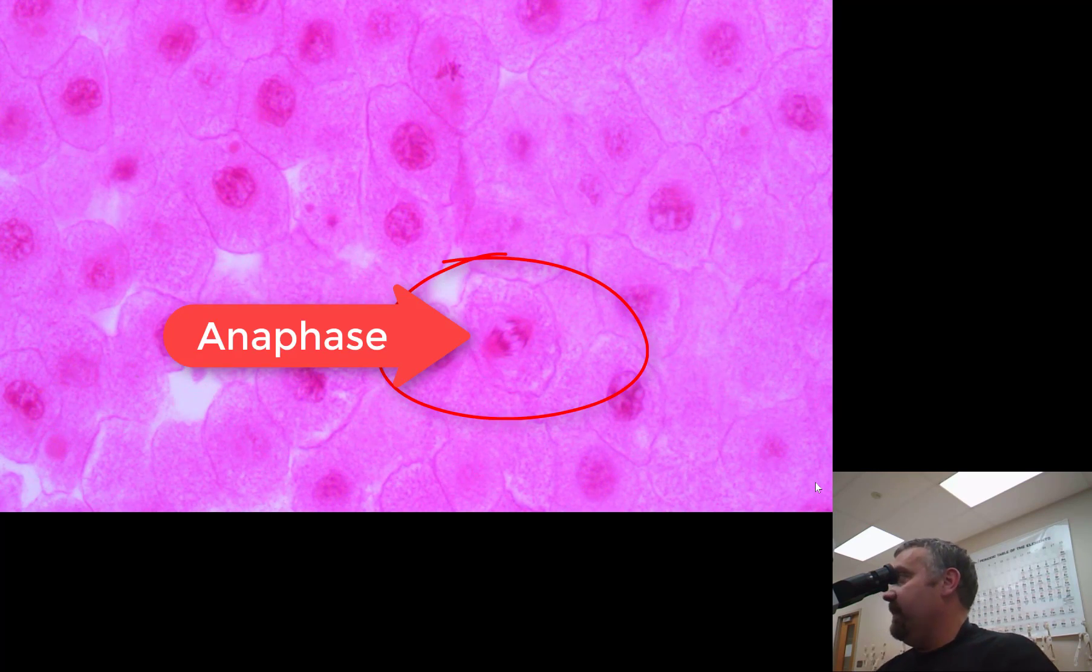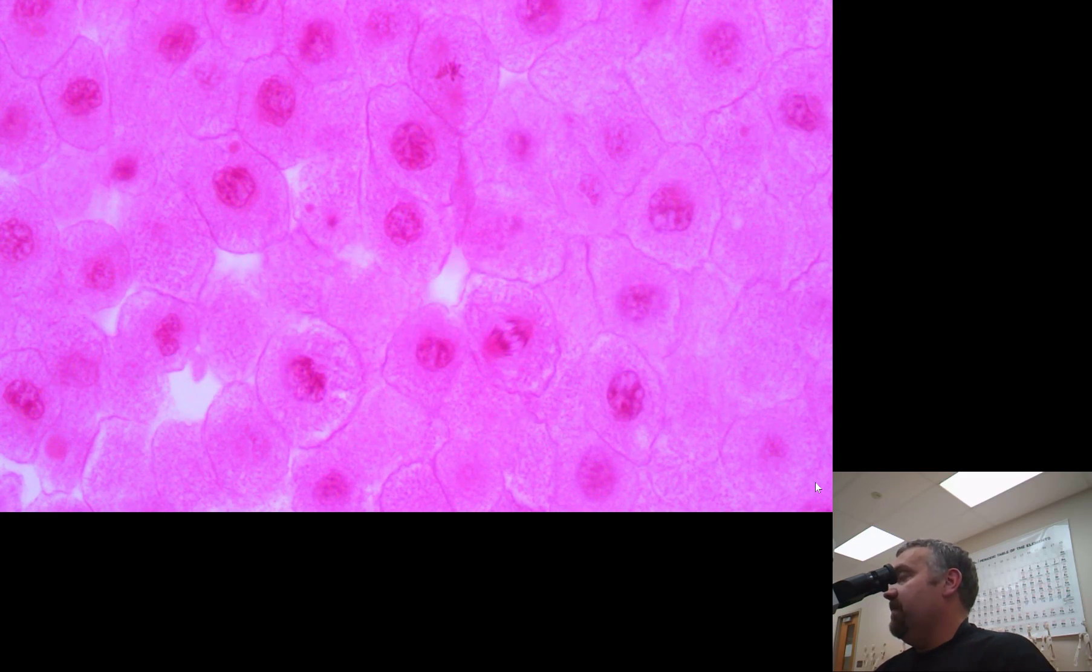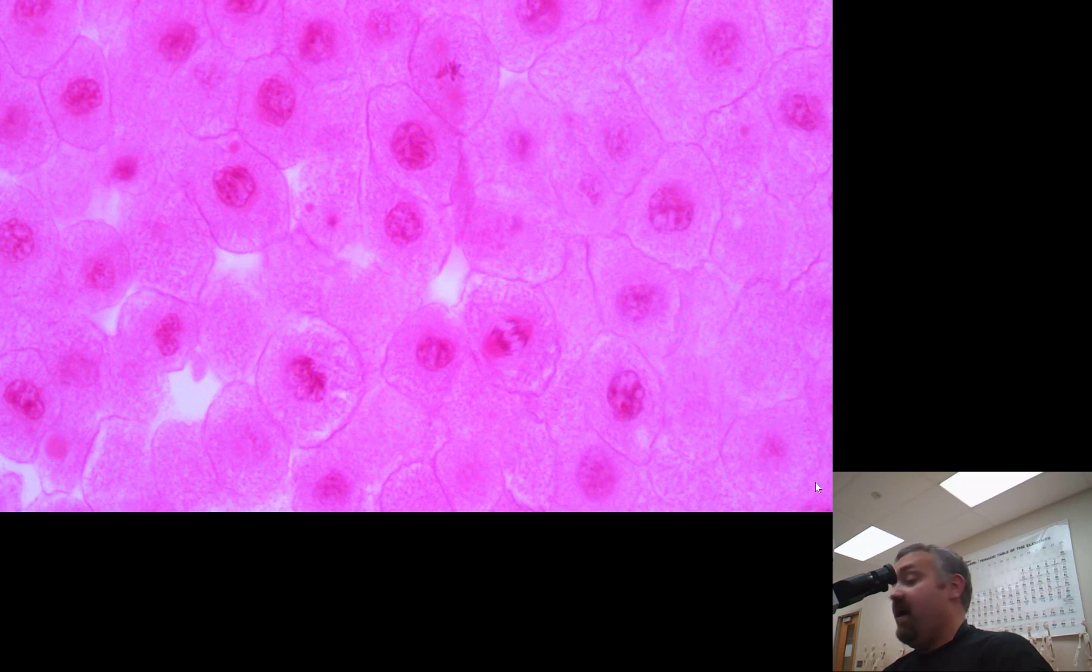Just quickly, this is not the reason for this video, but during prophase, the nucleus would disappear. During metaphase, the chromosomes will line up at that equator, the metaphase plate that I just showed you. During anaphase, the chromosomes will be pulled apart into two separate piles. And then during telophase, two new nuclei will form.